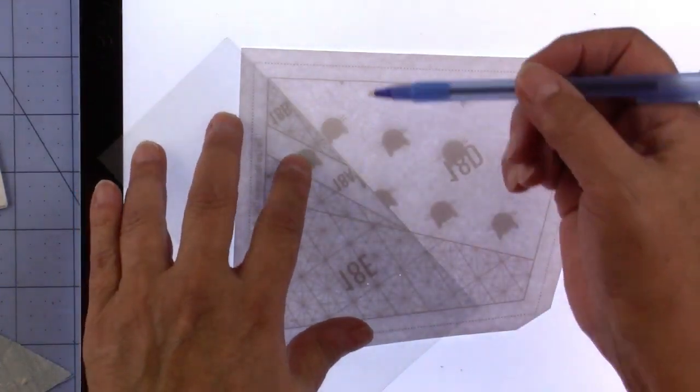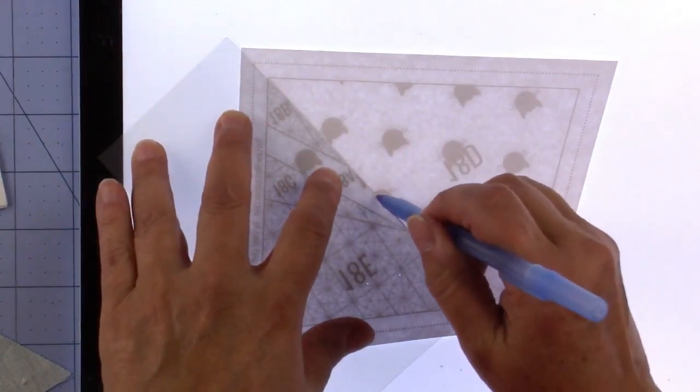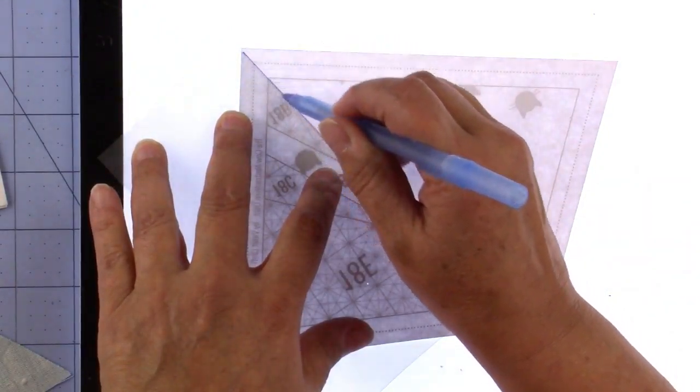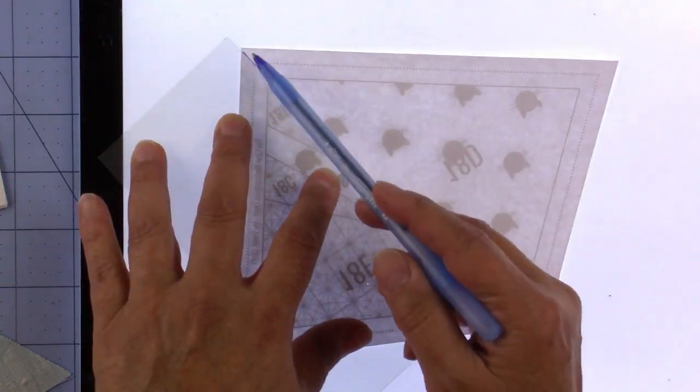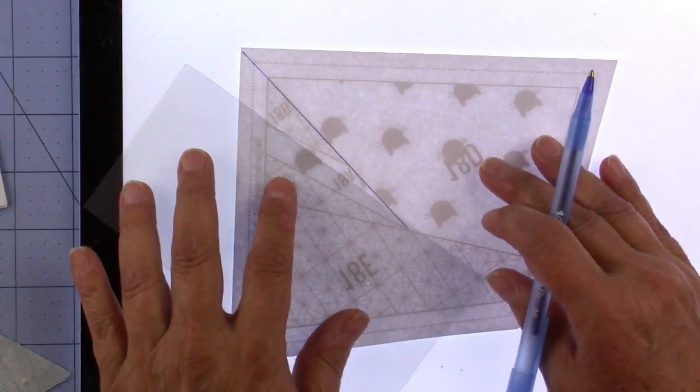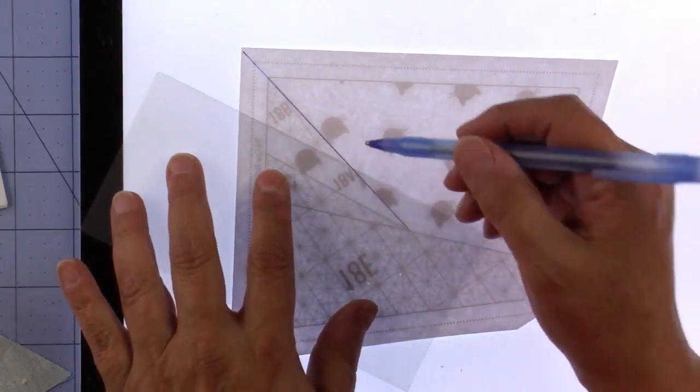I'm going to go on each line and make the lines go all the way to the outside into the seam allowance and just trace each line.